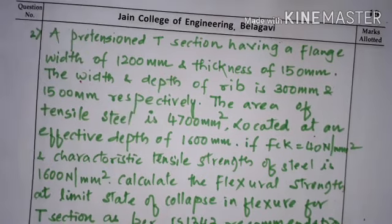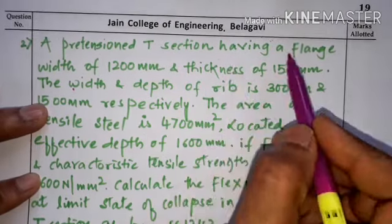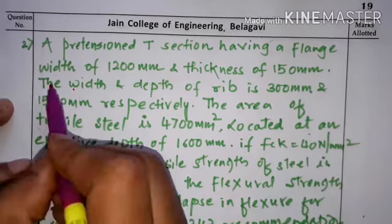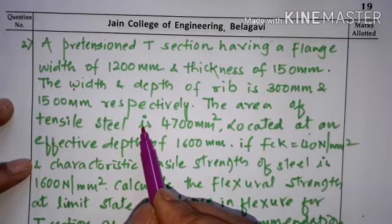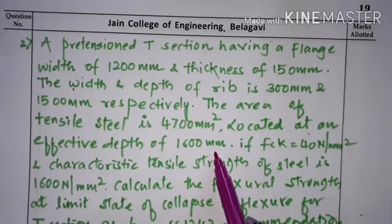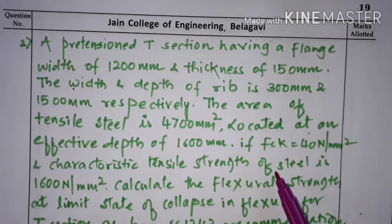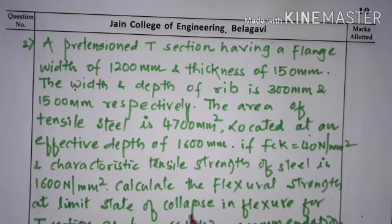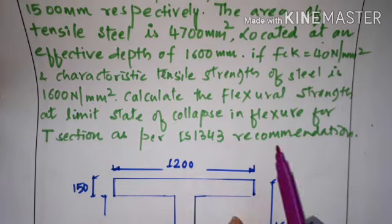The second problem: a pre-tensioned T-section with flange width 1200 mm and flange thickness 150 mm. The rib width and depth are 300 mm and 1500 mm respectively. The area of tensile steel is 4700 mm² at an effective depth of 1600 mm. FCK = 40 N/mm², FP = 1600 N/mm². Calculate the flexural strength at limit state of collapse as per IS 1343.